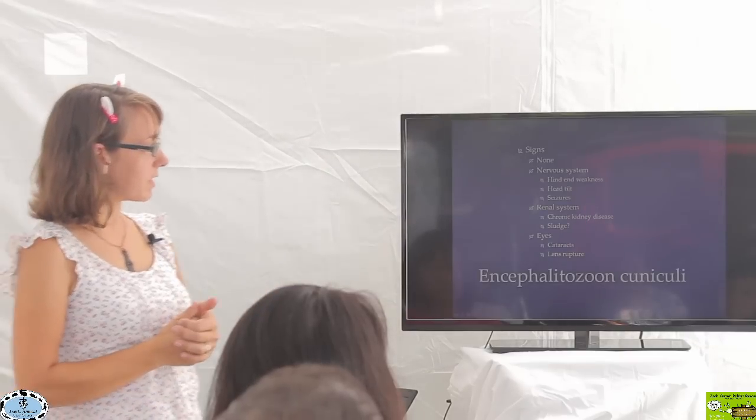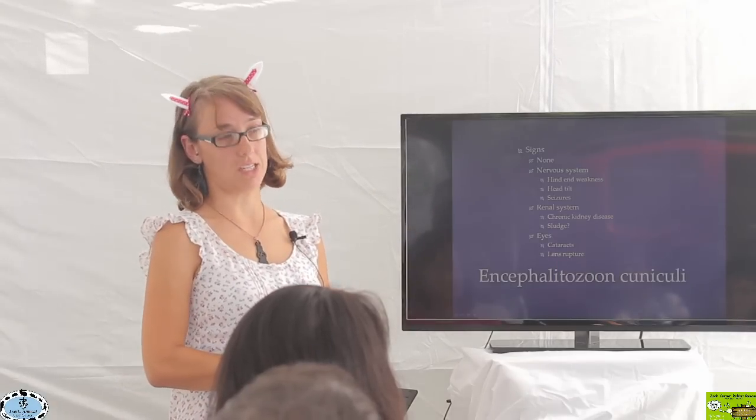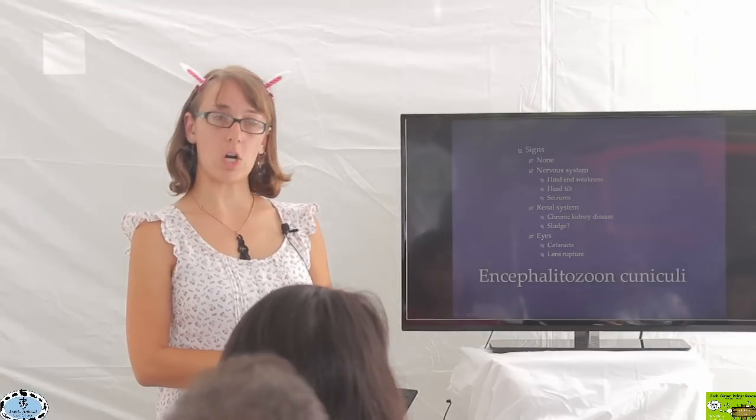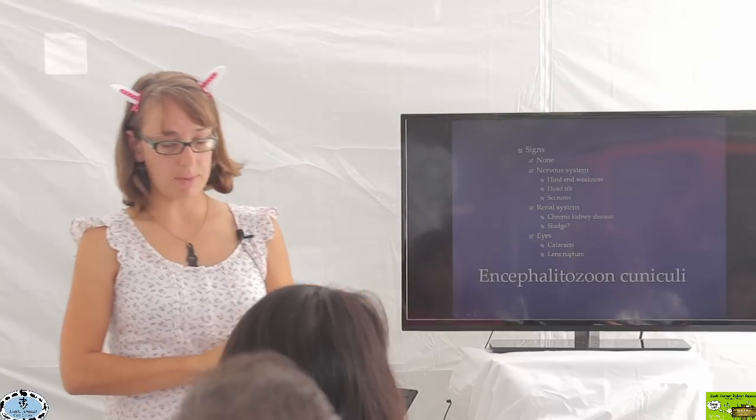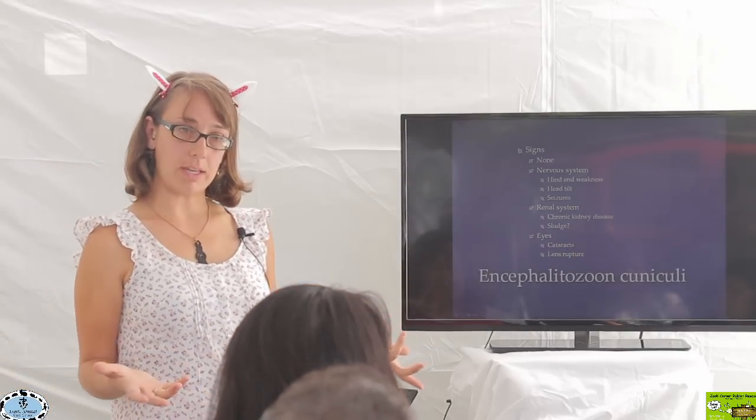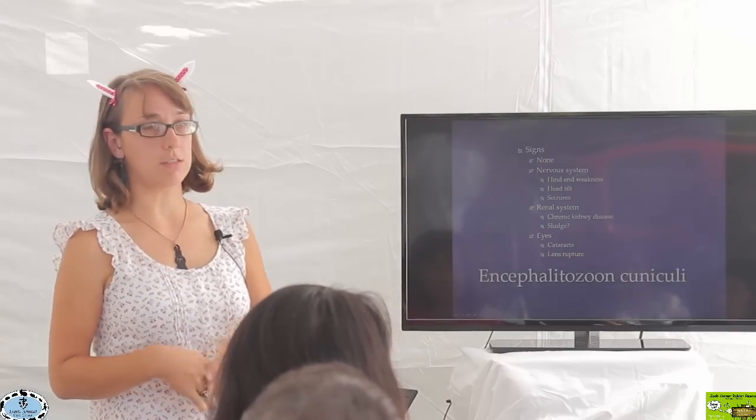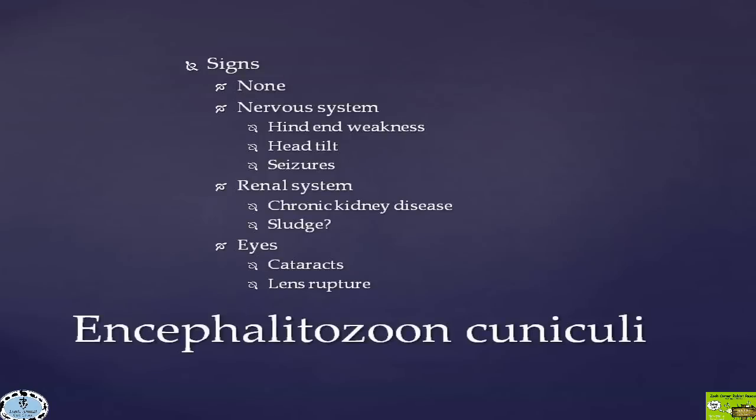This slide is about the signs that we'll see. The most common sign is no sign. E. cuniculi is an extremely, extremely common organism. When we have a rabbit diagnosed with it, people often ask me where their rabbit got this from and how it occurred. The unfortunate reality is it's very widespread in the rabbit population, the pet rabbit population.